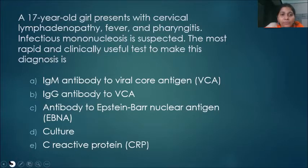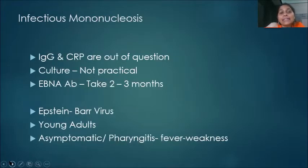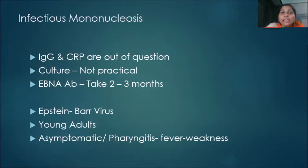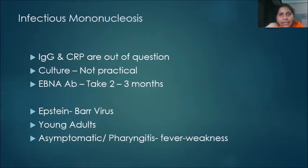If we go on ruling out, IgG and CRP are clearly out — IgG indicates a remote infection and CRP is just a prognostic test. For viruses, culture is not a practical option. The only confusing point is EBNA versus VCA IgM, but EBNA antibody takes longer — around 2 to 3 months to appear. So the answer is IgM antibody to VCA.